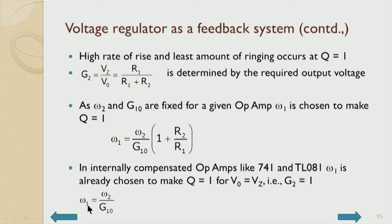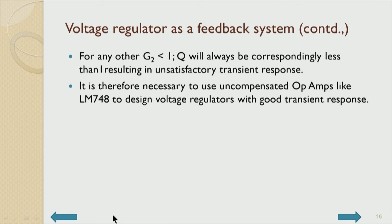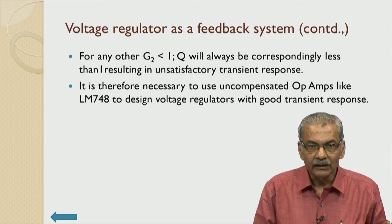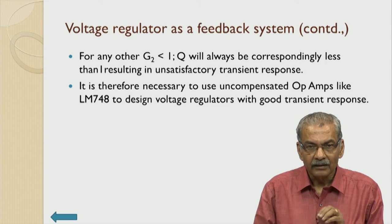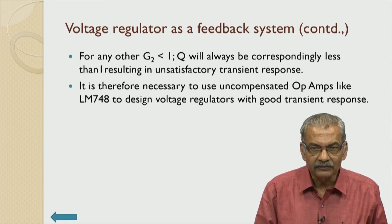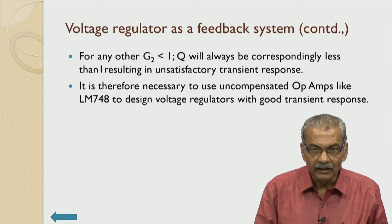For internally compensated op-amps, ω1 has already been fixed as ω2/G10, so Q equals 1 only for unity gain (V_out = VZ). For any other gain greater than 1, Q will be less than 1, resulting in unsatisfactory transient response — the output will be sluggish in rising to the required voltage every time switching occurs. It is therefore necessary to use uncompensated op-amps like LM748 to design voltage regulators with good transient response.